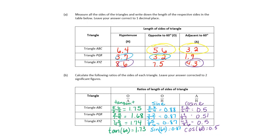If I divide the adjacent side by the hypotenuse of any right triangle — and this only works in right triangles — for a 60-degree angle I will always get 0.5. Now, you never have to memorize what tangent of 60 or tangent of 30 or tangent of 45 is. When I was in high school they gave us a table, but you're going to use the calculator — you'll type in tangent of 60 and get 1.73.